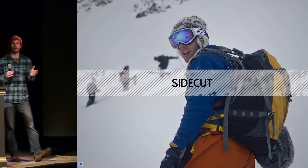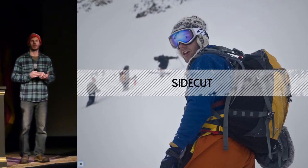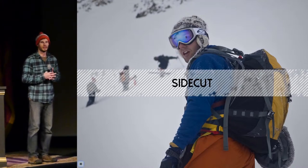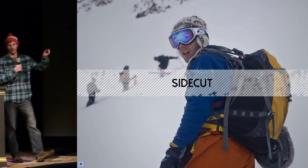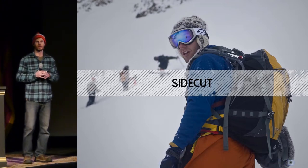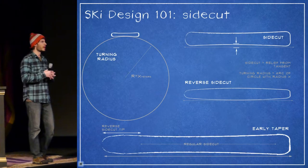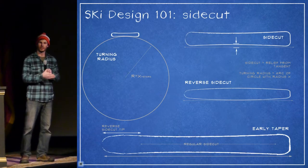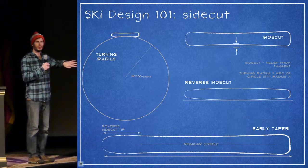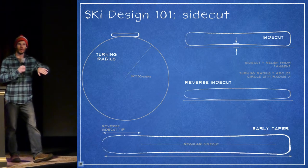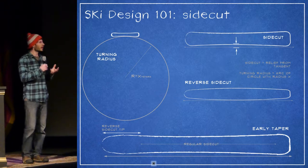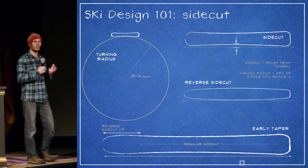Side cut is what's created when you have a narrower waist in the ski than the tip and tail, and it's often reported on a ski as the turning radius. This is the radius of a circle whose arc connects the tip, waist, and tail of the ski, and it's a good indication of the size of the turn that ski wants to carve. What actually happens with side cut is it doesn't cause the ski to carve directly — what it does is when you roll the ski on edge, it creates a void underfoot, and the ski wants to contact the snow equally along its whole length, so it bends. So what side cut actually does is give the ski a propensity to bend.